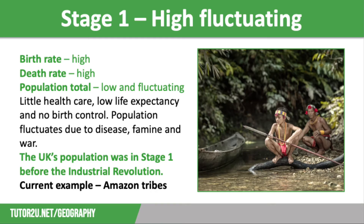Stage 1 is high fluctuating. Both the birth and death rates are high, making the population total low but fluctuating. In Stage 1, there is very little healthcare, resulting in a high death rate and low life expectancy, and no birth control, which is why the birth rate is high. The population fluctuates because of outbreaks of disease, famine and war.